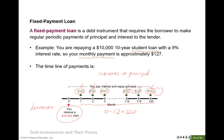Overall, if you think about the four different debt instruments: for simple loans and discount bonds — the first two — there is only one payment at the end. For coupon bonds and fixed payment loans — the third and fourth — payment is required each period. Still, they differ: the fixed payment loan includes part of the principal in each periodic payment, while the coupon bond requires repayment of the principal once at the end.